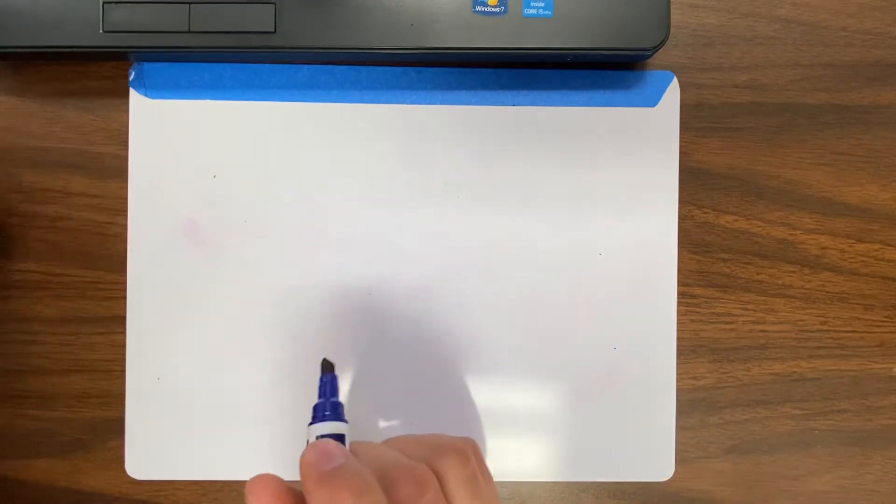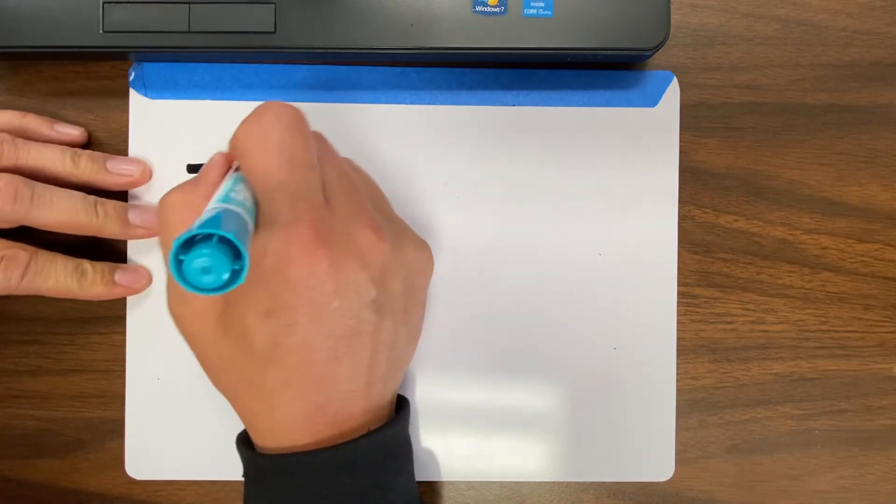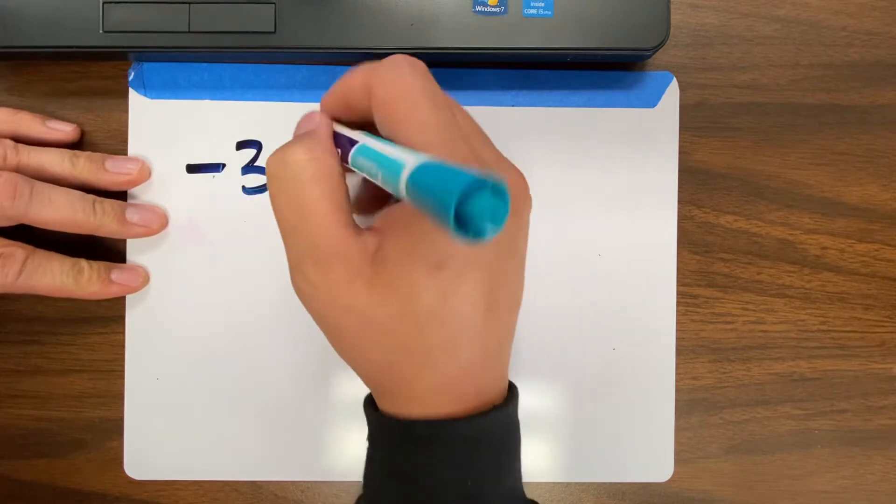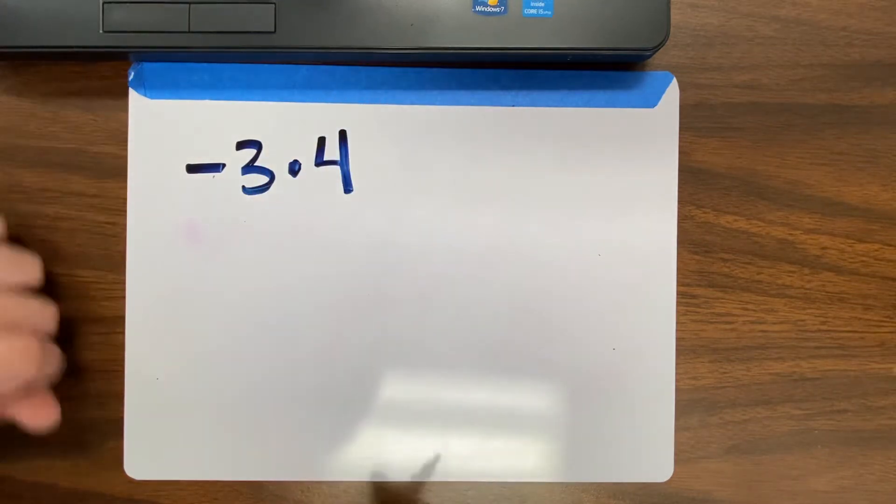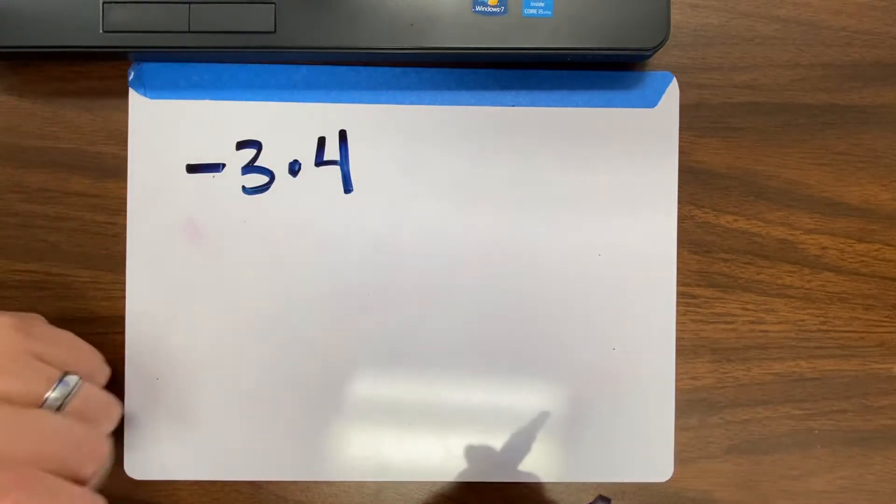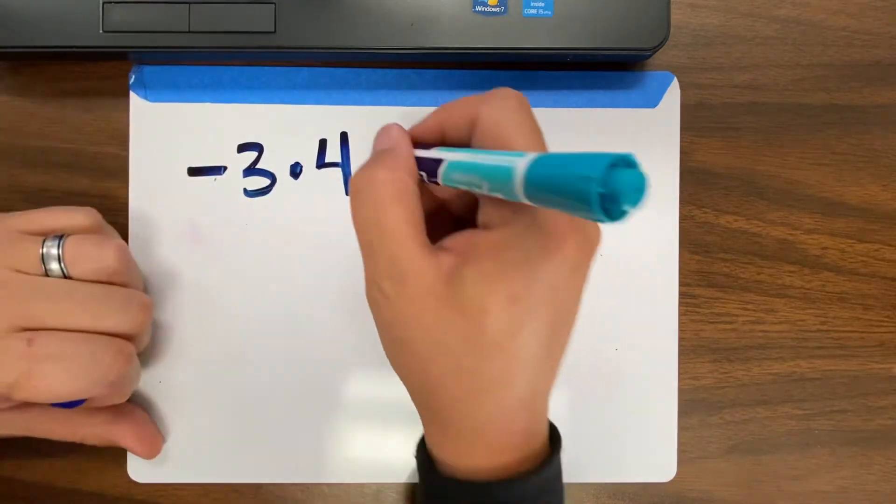Multiplying and dividing with positives and negatives. The rule is negative 3 times 4. Multiply like you learned in 3rd and 4th grade. 3 times 4 is 12.